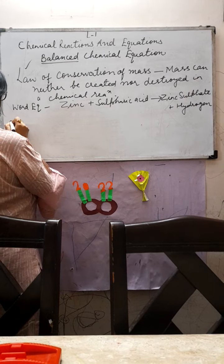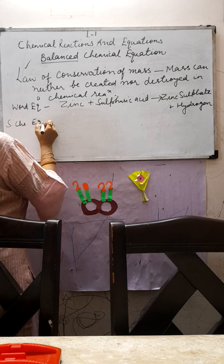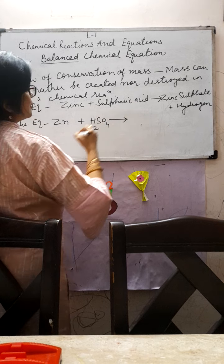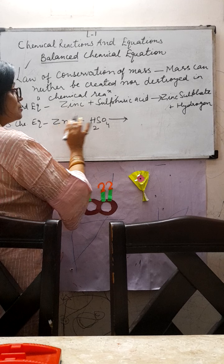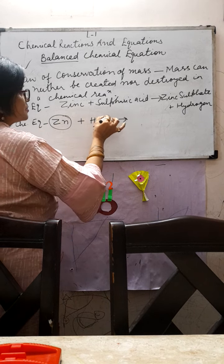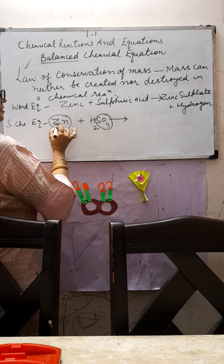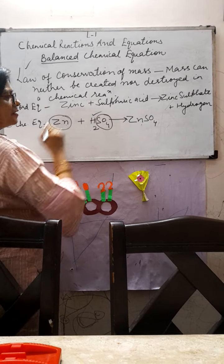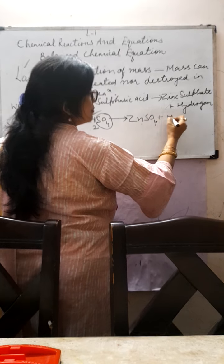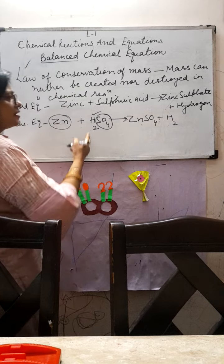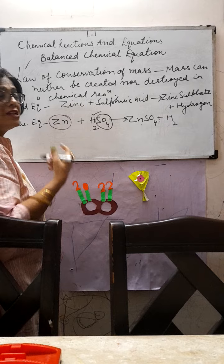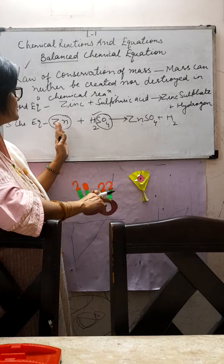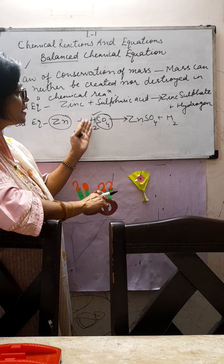Now if we write the skeletal chemical equation, it will be: Zn + H₂SO₄ → ZnSO₄ + H₂. How do we find out what is formed? Zinc reacts with the sulfate ion and forms ZnSO₄. What is left behind? Hydrogen. So the next product is hydrogen. That is how simply we find out what the products are — this is a common question among students.